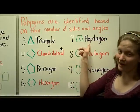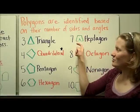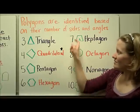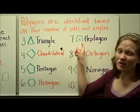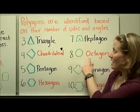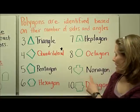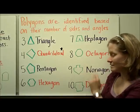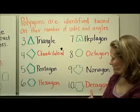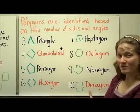A heptagon has seven sides and seven angles. It's kind of hard to draw a heptagon that looks like one of these with seven sides, so I drew an irregular heptagon, but if you counted it, it would have seven sides. An octagon has eight sides, which is the shape of a stop sign. A nonagon has nine sides and a decagon has ten sides. You can remember decagon because a decade is a group of ten years.